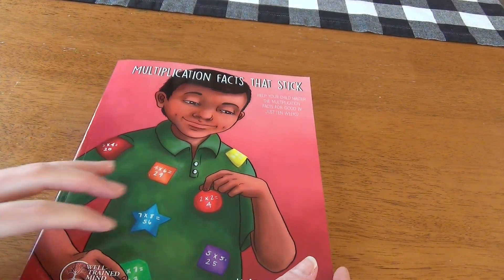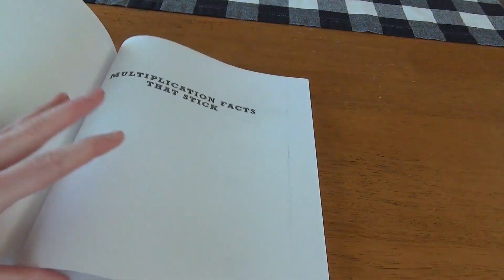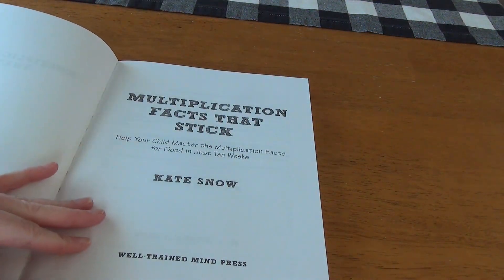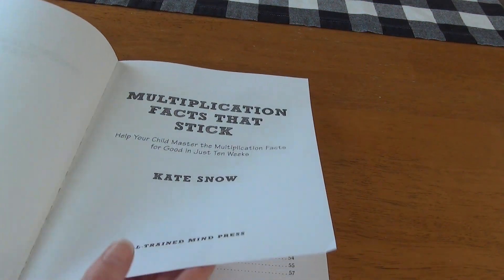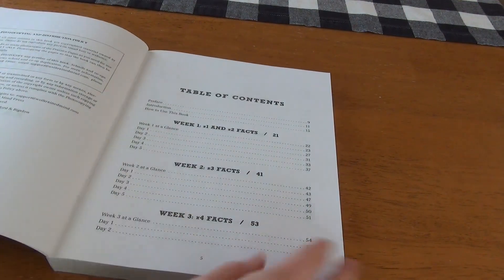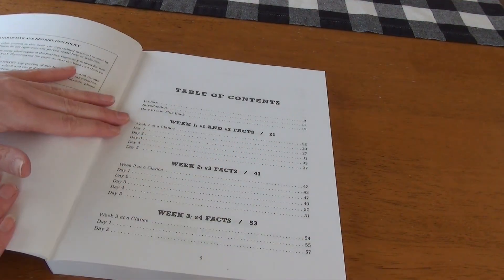But this is the actual instruction or the lessons. This is by Kate Snow. And she uses something that I feel like is kind of similar to maybe a Singapore math method. So here's the table of contents.